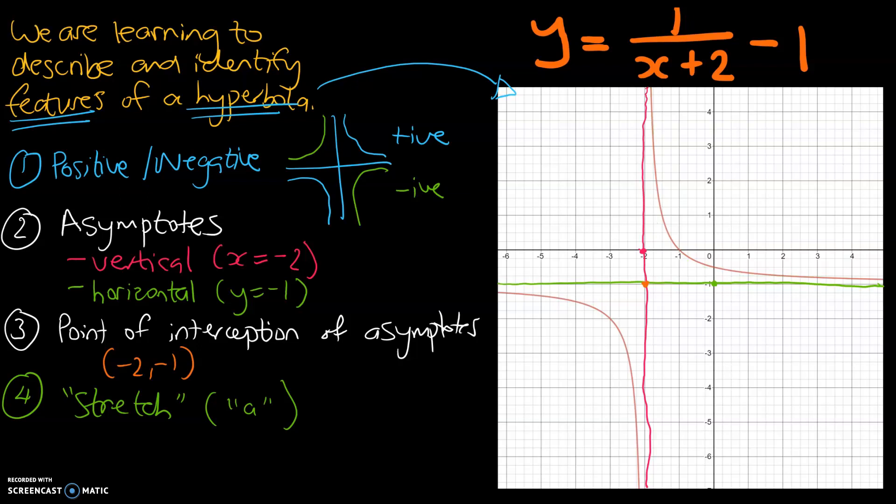So hopefully you found this video useful. The key thing we are trying to get across is the idea of asymptotes for hyperbole - very important. And those asymptotes have a very strong link to the equation, which we'll be able to determine looking at our next video. See you later, guys.